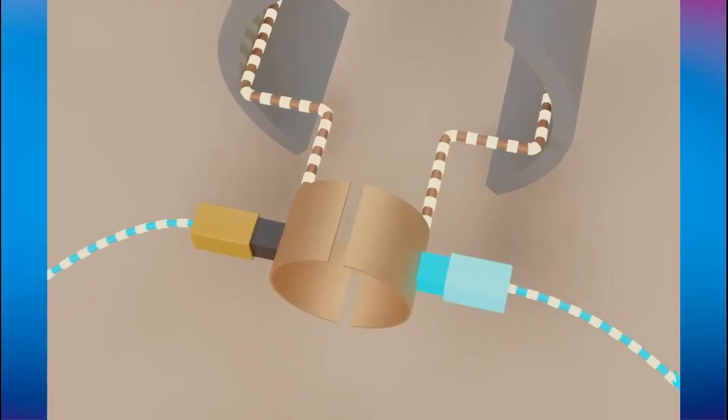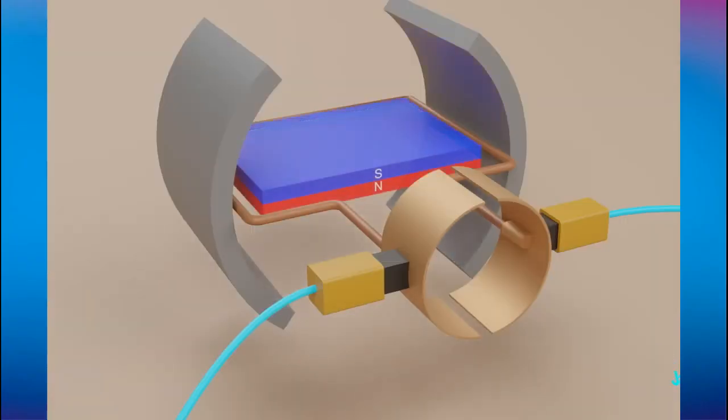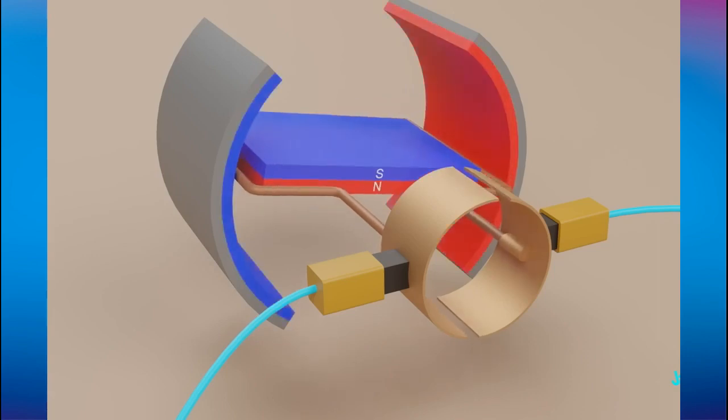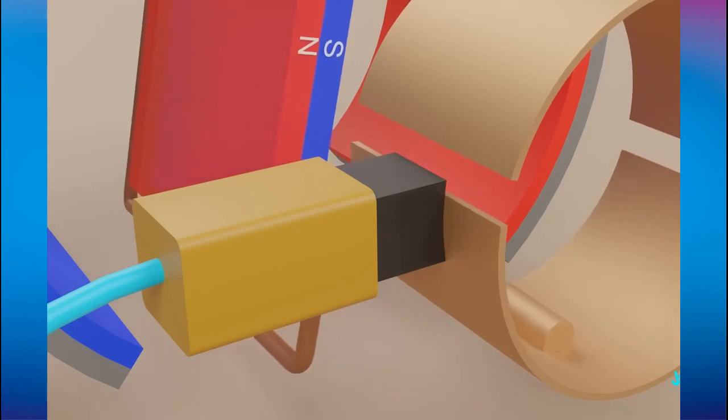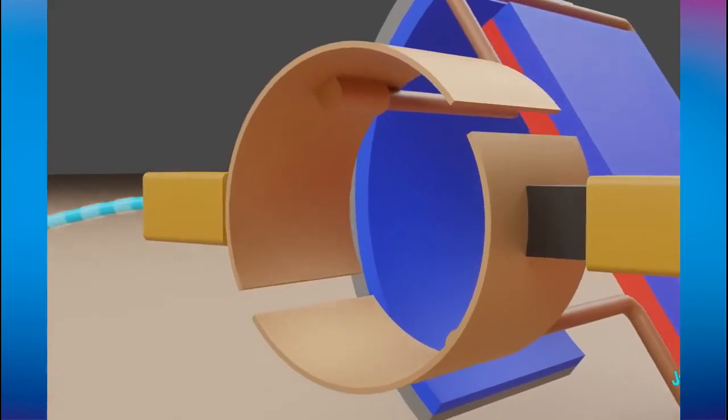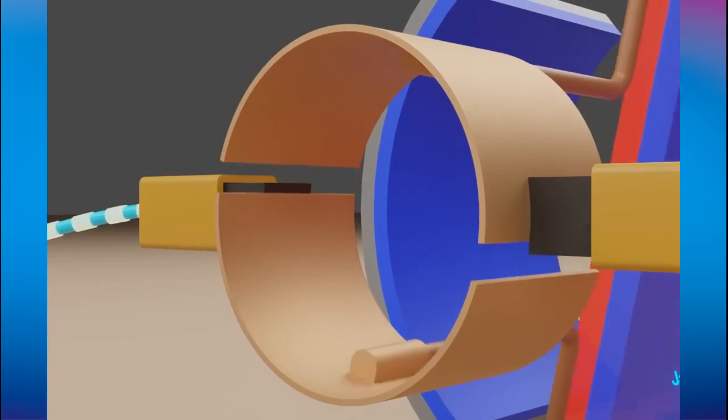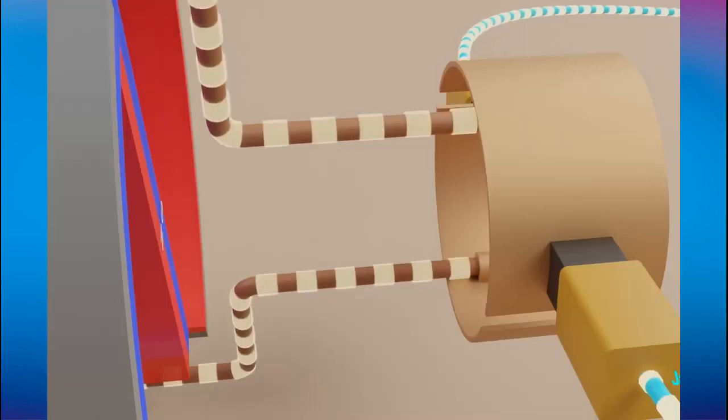The stator is the stationary part of the motor while the rotor is the rotating part. AC motors can be single or three-phase, with three-phase motors mainly used for bulk power conversion. Single-phase AC motors are used for small power conversions.